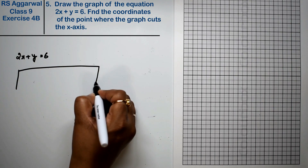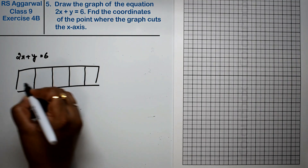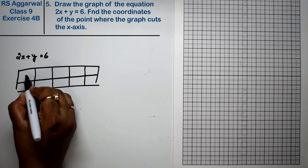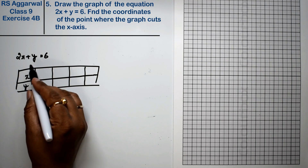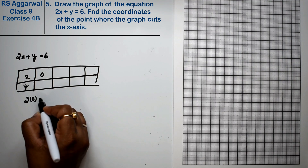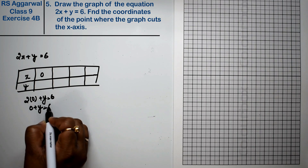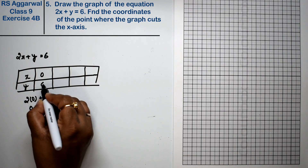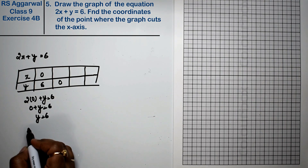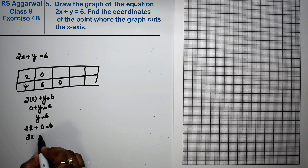To plot the graph, we will make a table first. If I keep the value of x as 0, then 2(0) plus y equals 6, so y equals 6. If I keep y's value as 0, then 2x plus 0 equals 6, so x equals 6 divided by 2, that is 3.